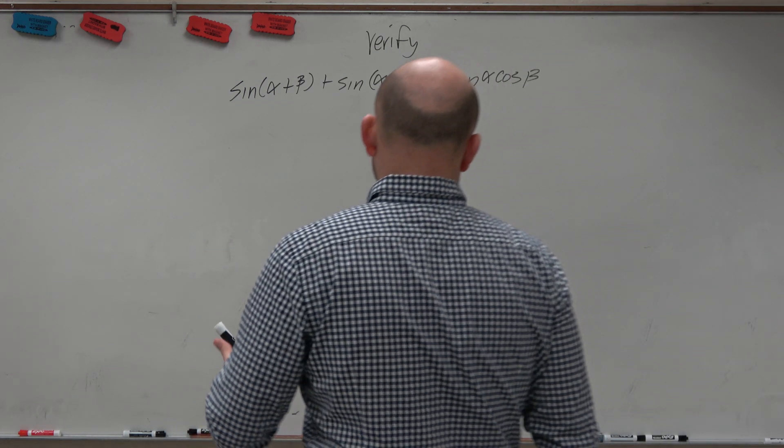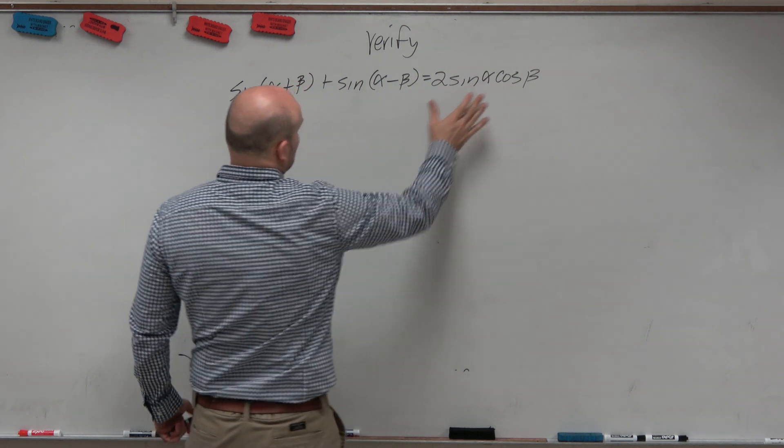So now we don't know what alpha and beta are. These are variables. But again, we want them to look like the left-hand side.